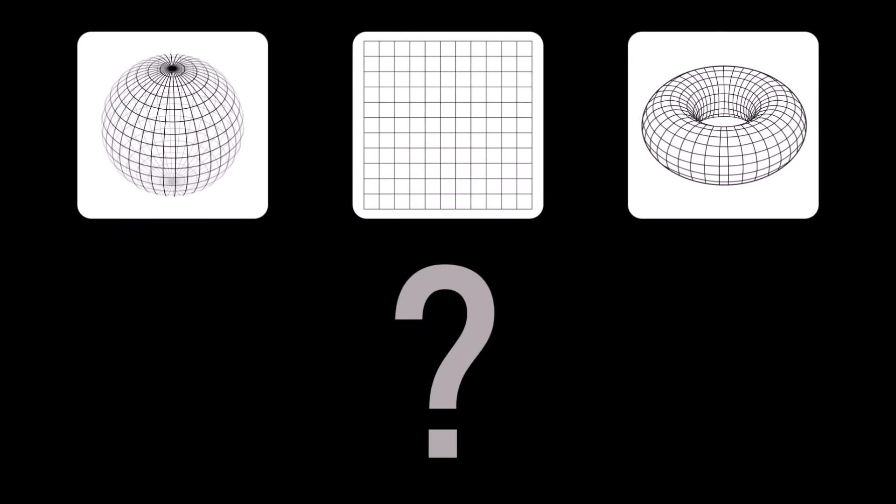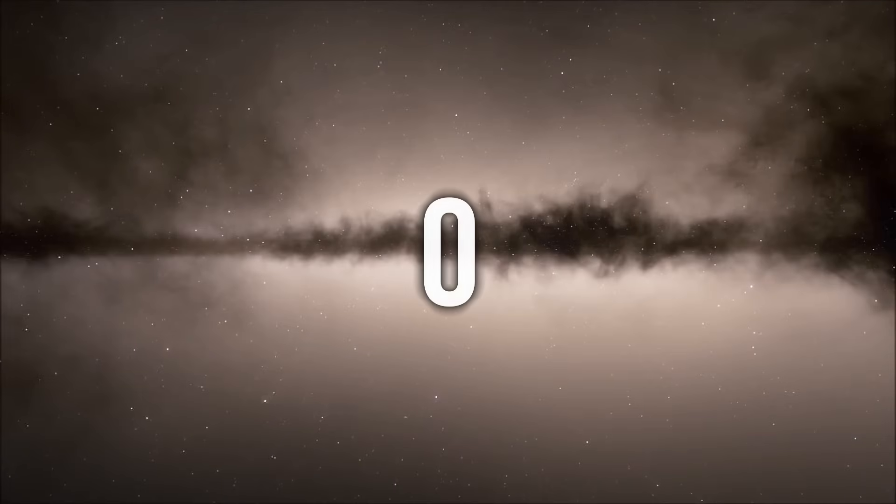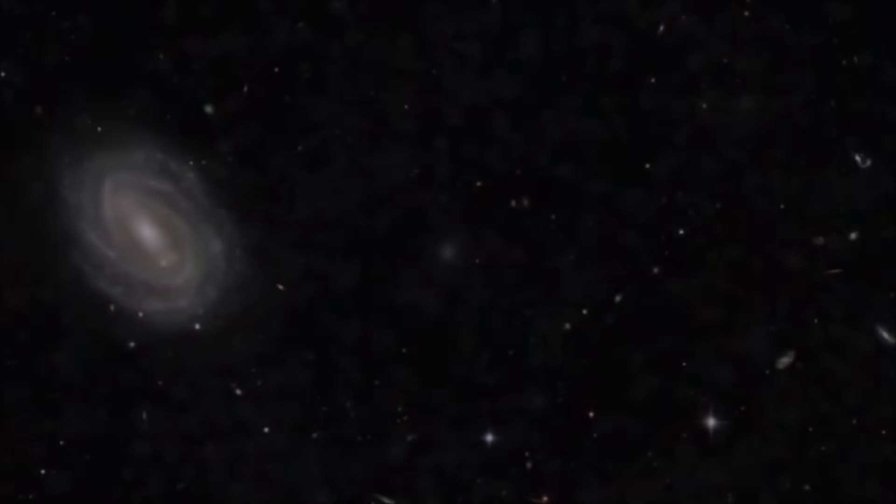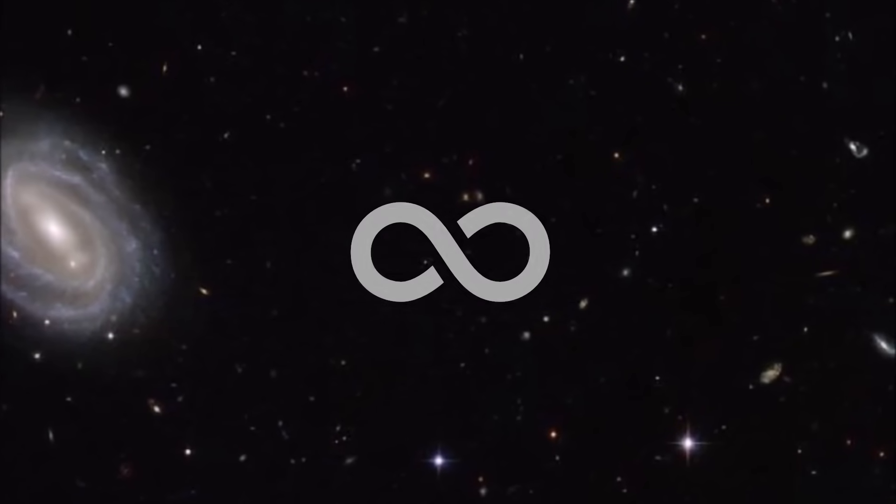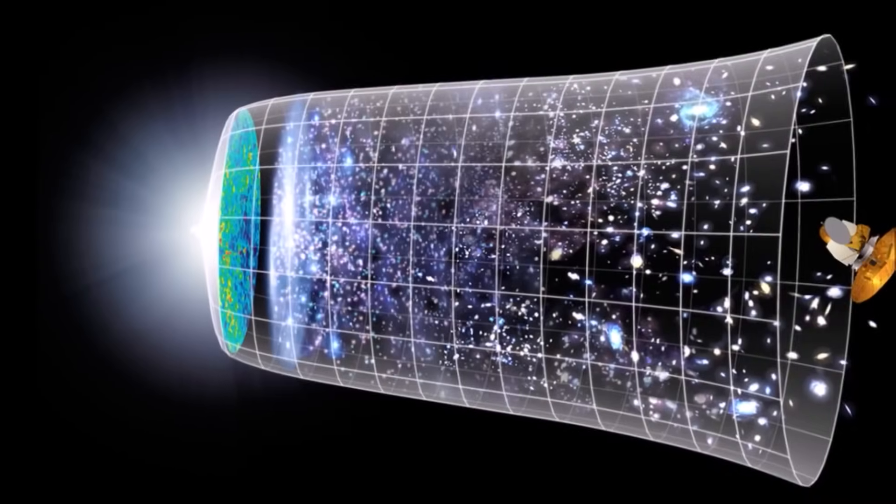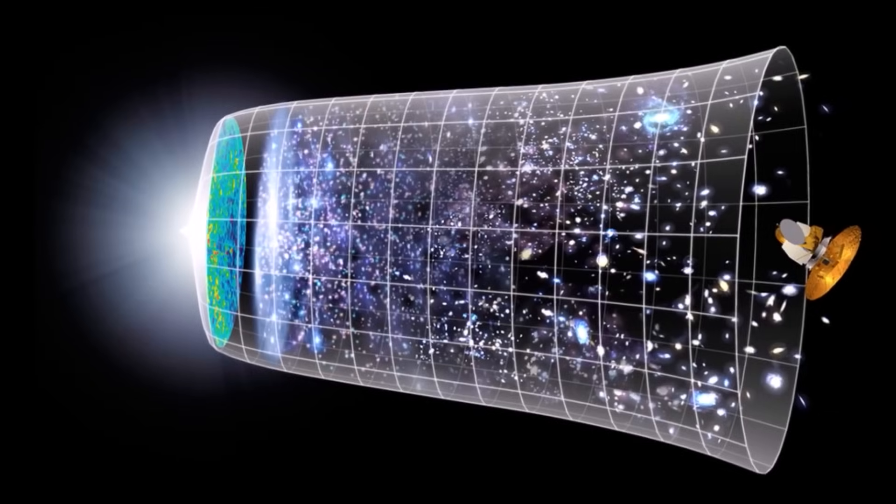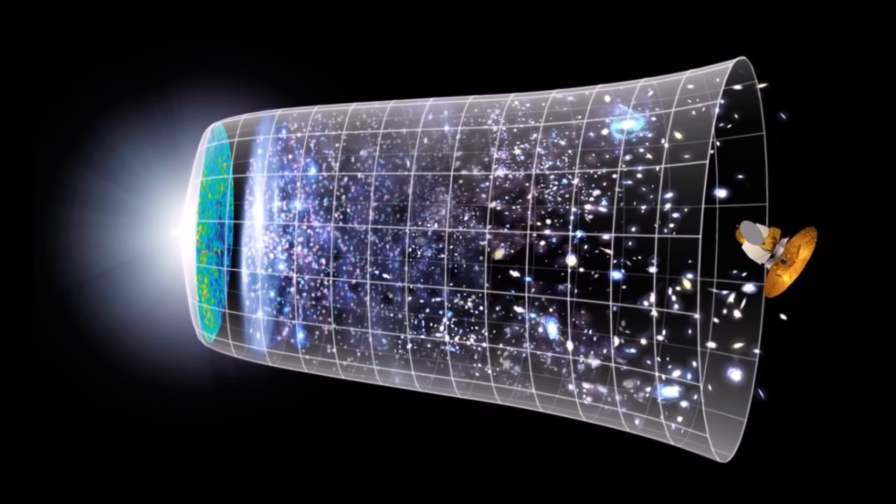On one hand, it seems like the answer should be zero because anything multiplied by zero equals zero. On the other hand, it appears to be infinity because anything multiplied by infinity equals infinity. The solution hinges on just how close to zero that zero is and how vast that infinity truly is. In our practical context, we can't precisely quantify how unlikely it is for a particular life form to evolve, making the problem indeterminate.